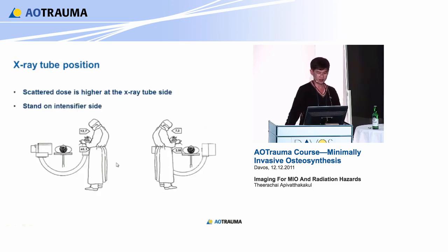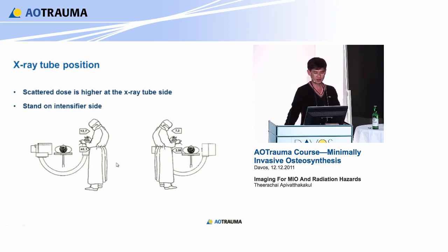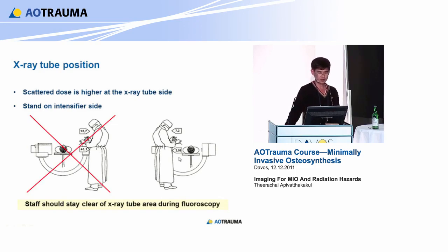On the lateral X-rays, the X-ray tube position matters greatly. In the past I thought if the tube is here and I stand here, I might be in the direct beam - but it's not true, it's the reverse. Comparing positions: 40 units versus only 2.5 if you stand in the correct place. So be careful - think all the time when you push the pedal. Stay clear from the tube side. The risk for the thyroid is 3 or 4 times higher if you stand on the wrong side.